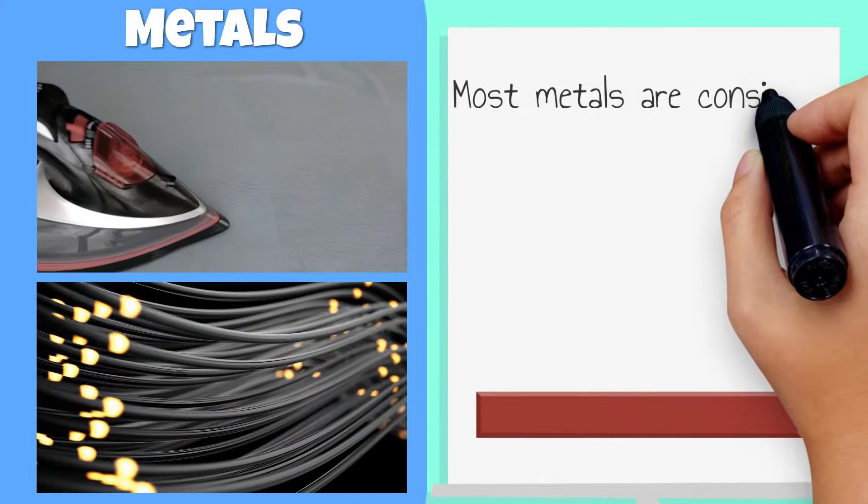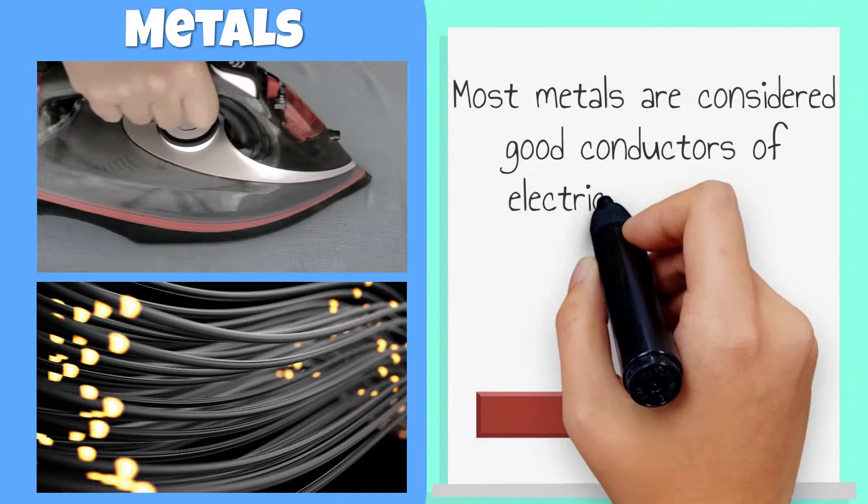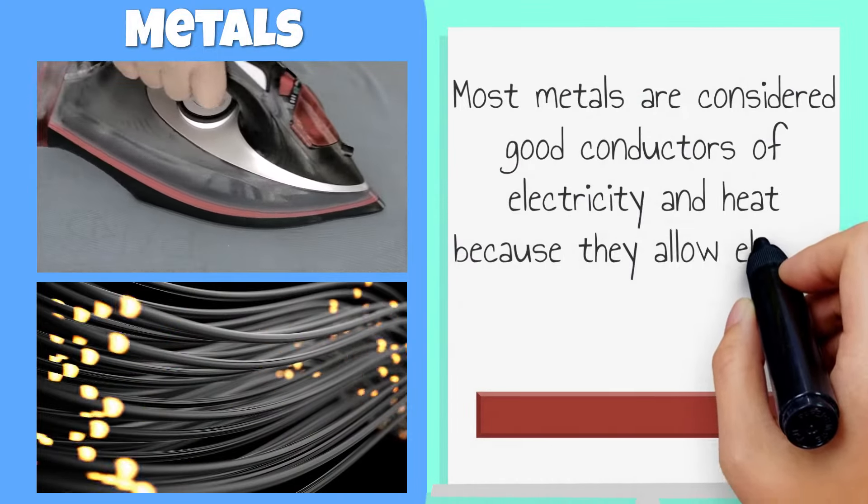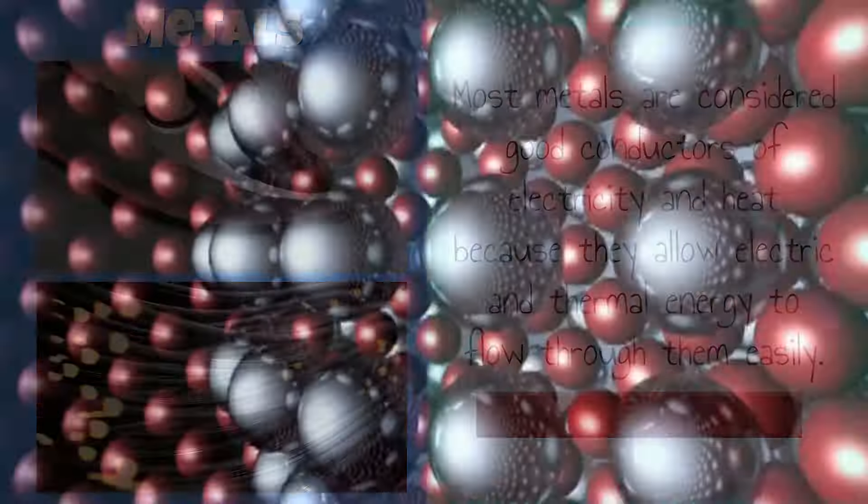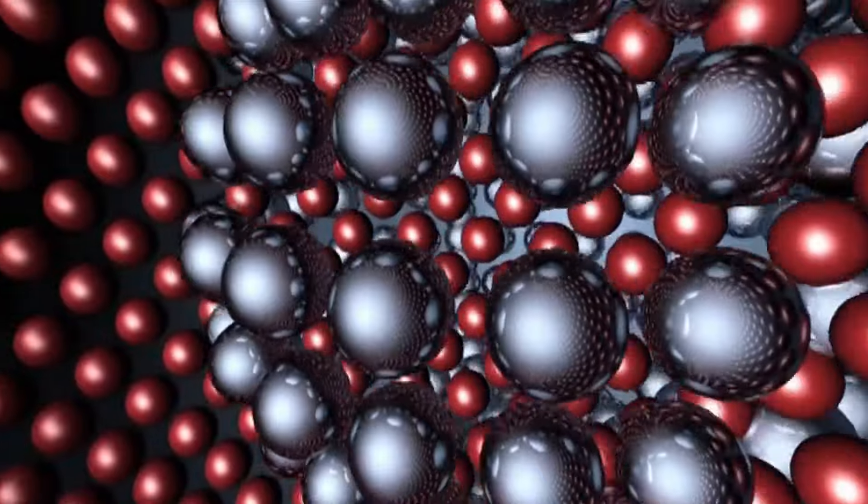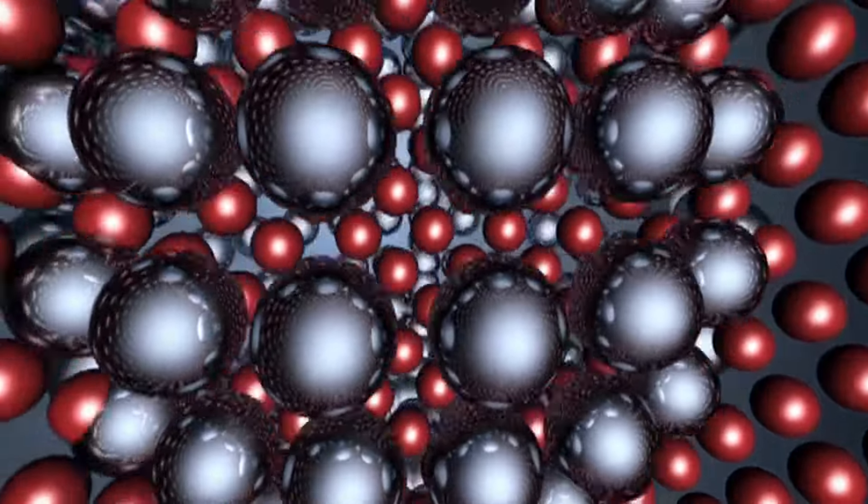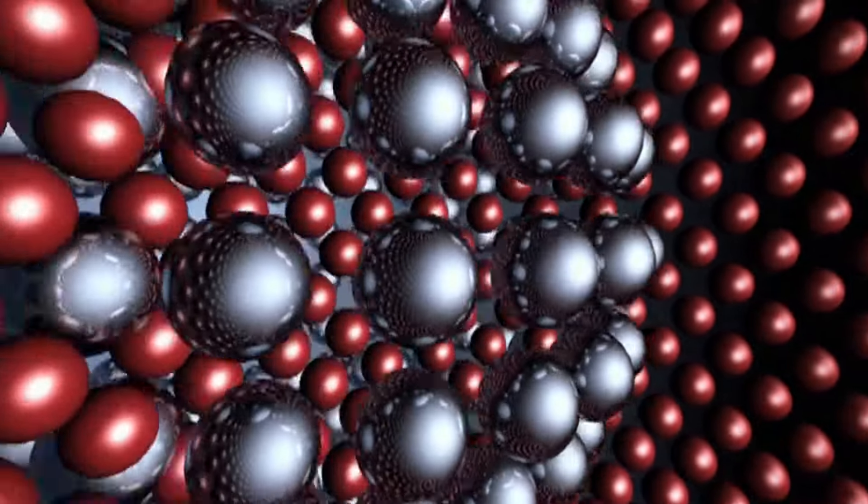Most metals are considered good conductors of electricity and heat because they allow electric and thermal energy to flow through them easily. This is because matter inside of metals is arranged so that energy can flow freely.